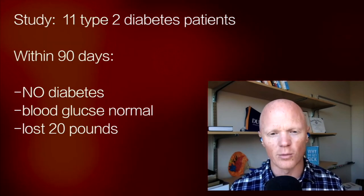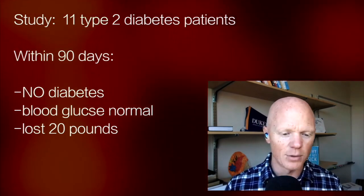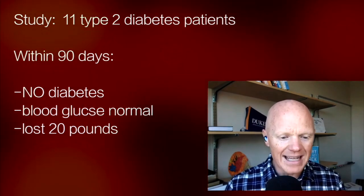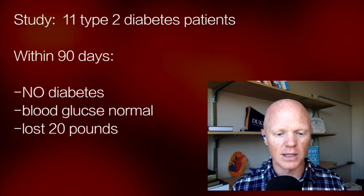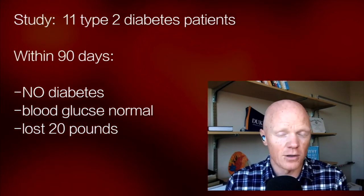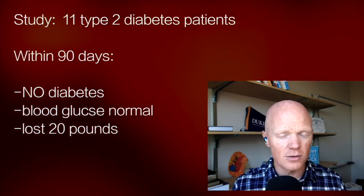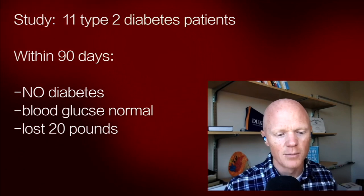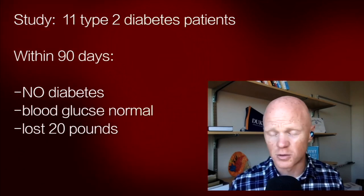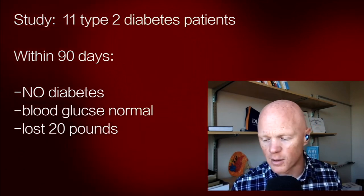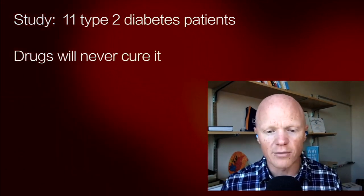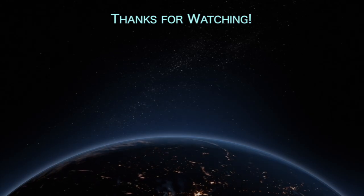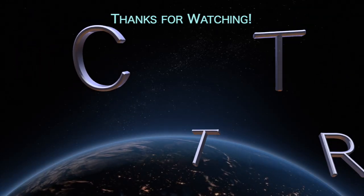Within 90 days, they had nary a whiff of diabetes. Their glucose was totally normal. They had lost 20 pounds. Their blood pressure had come down. By any definition of the disease, we had cured it — which is a term you're not supposed to use with type 2 diabetes. You're not supposed to say you cure it, because if you just use drugs to solve the problem, you will never cure it. But with the right nutritional approach, you can.